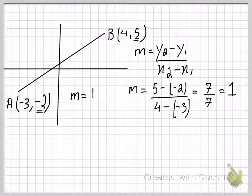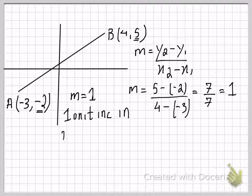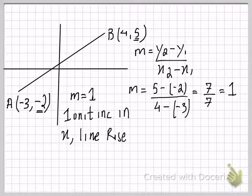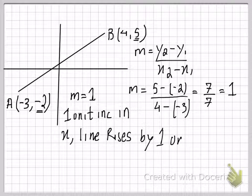m equals 1 means that for every one unit increase in x, the line rises by one unit.